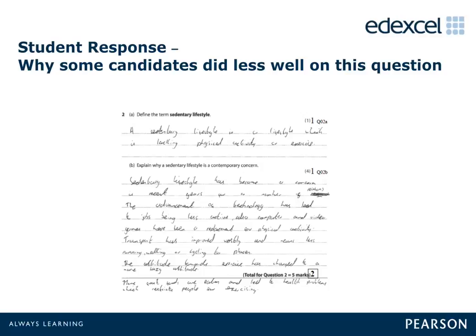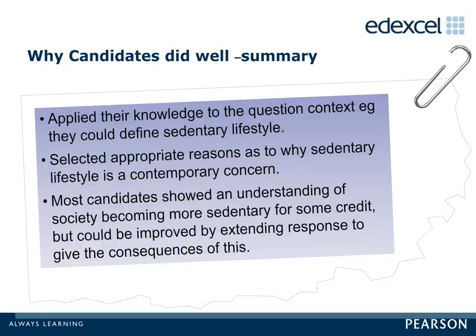Another learner gains 1 mark in 2a for 'a lifestyle lacking in physical activity.' However, they only get 1 mark for 2b when they state 'sedentary lifestyle has become a concern in recent years' — there is no rewardable material present in the rest of the response. Learners who did well on this question applied their knowledge to the question context, could define sedentary lifestyle, and selected appropriate reasons as to why sedentary lifestyle is a contemporary concern.